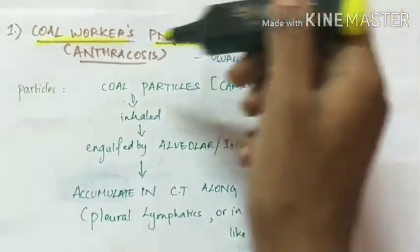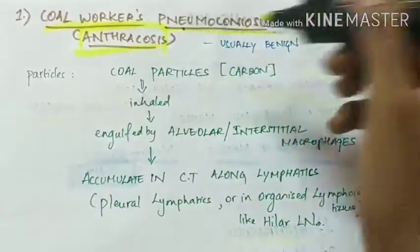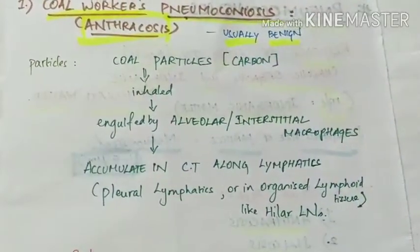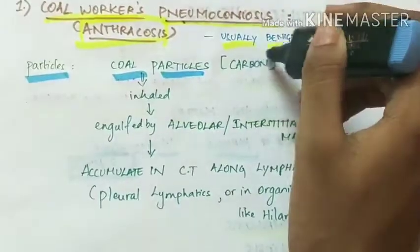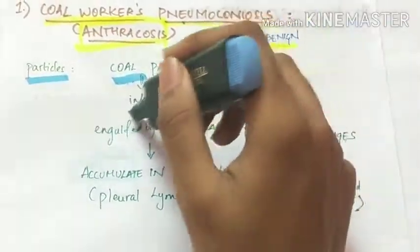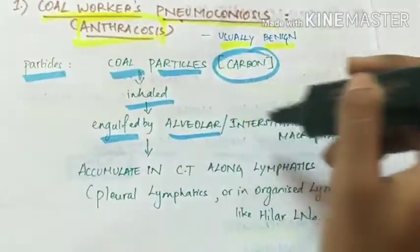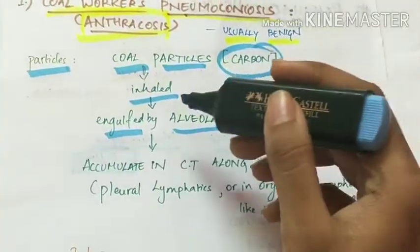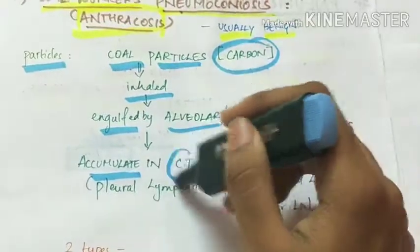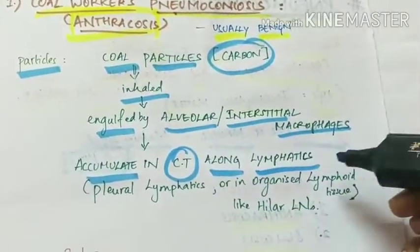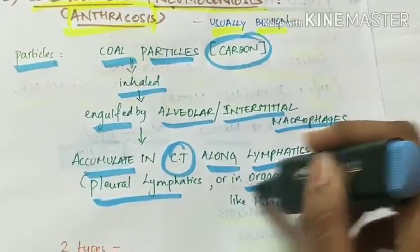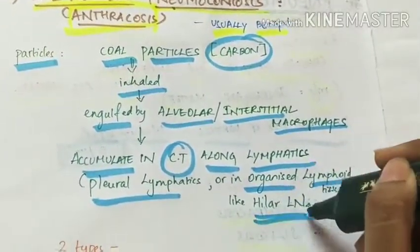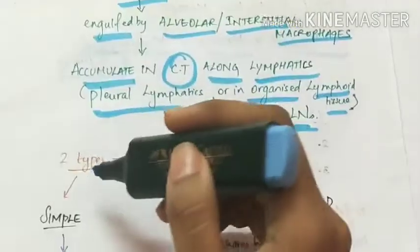The first disease in pneumoconiosis is coal workers pneumoconiosis, that is anthracosis. This is usually benign. The particles involved here are coal particles which contain carbon. When these particles are inhaled, they are engulfed by alveolar or interstitial macrophages called dust cells. These phagocytosed particles accumulate in the connective tissue along the lymphatics like pleural lymphatics, or in organized lymphoid tissue like hilar lymph nodes. Anthracosis is of two types: simple and complicated.